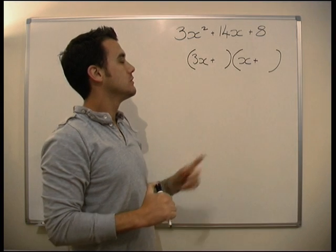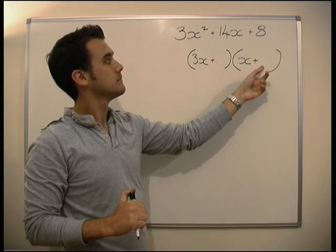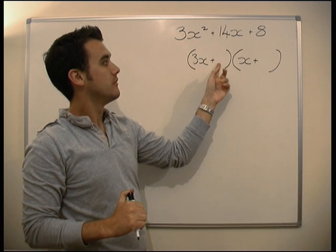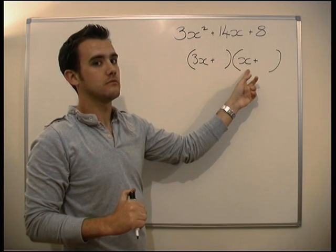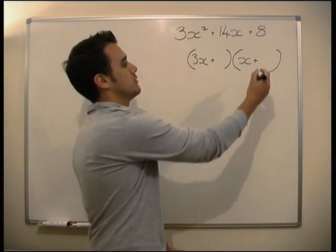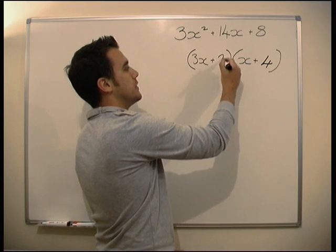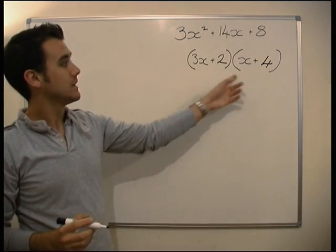3 times 2 is going to give us 6, add 4 times x - 6 plus 4 is only going to give us 10. So we're probably going to do it the other way round. We're probably going to want the 4 here and we're probably going to want the 2 here. Let's check it.